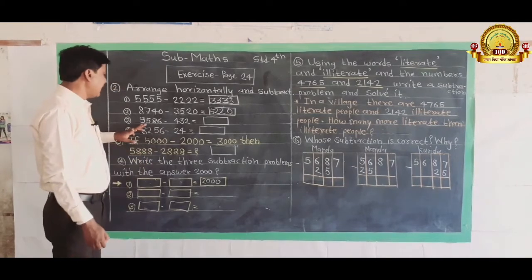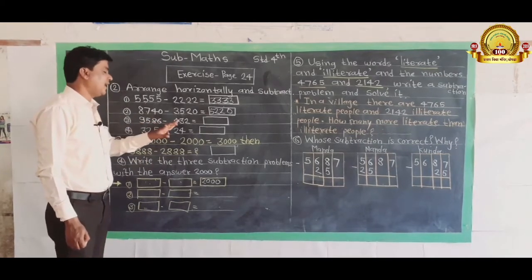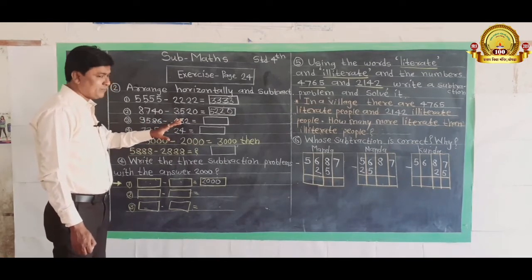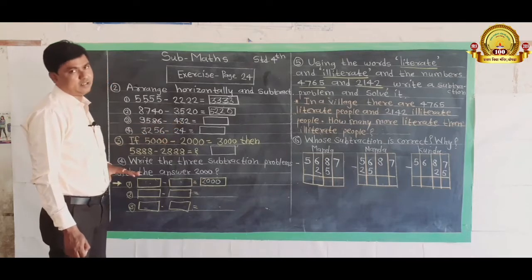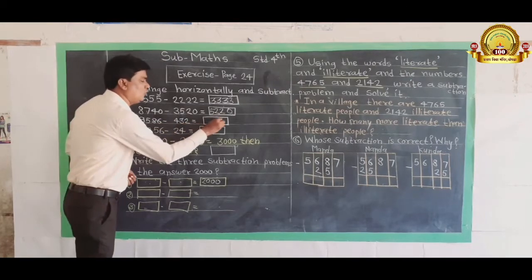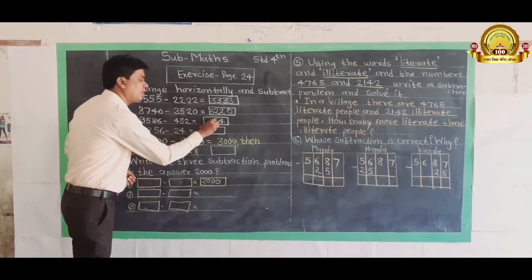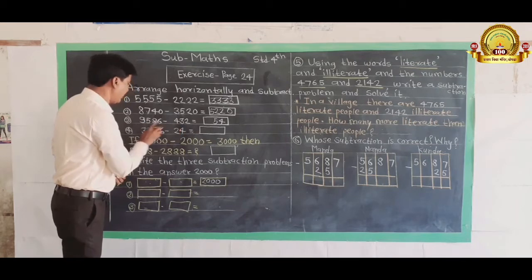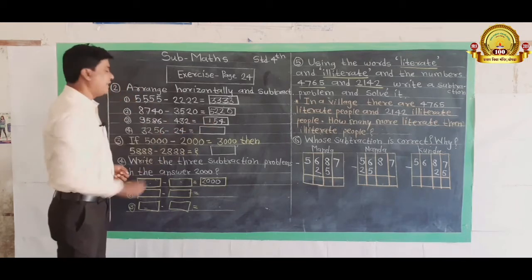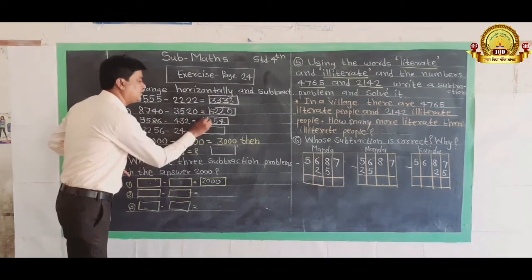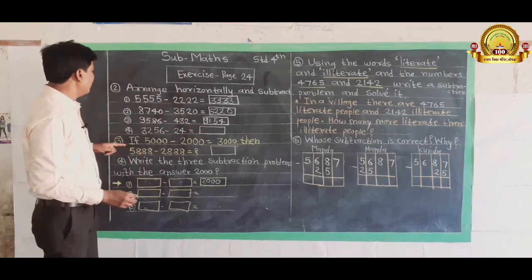This number is 9,586 and this is 432. Here is not 1000th place, I will use 100th place. Here is 6 minus 2 is 4. 8 minus 3 is 5. 5 minus 4, 500th place for 400, reminder is 100. And here is 1000th place. 9,154 is the answer.